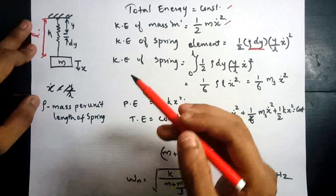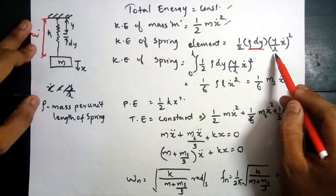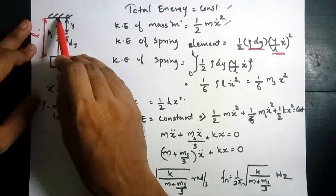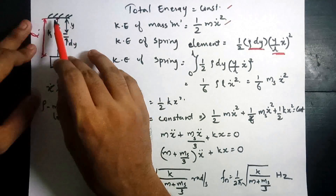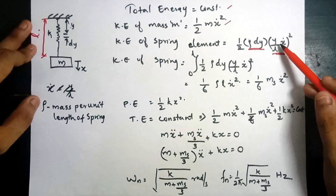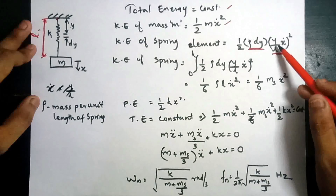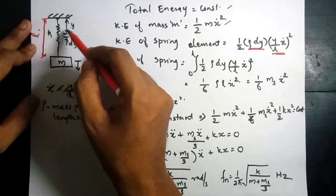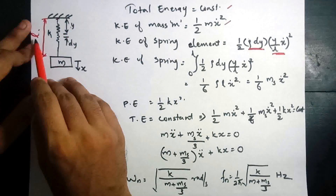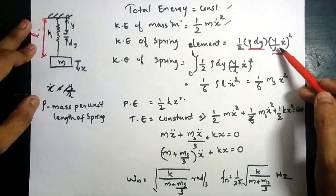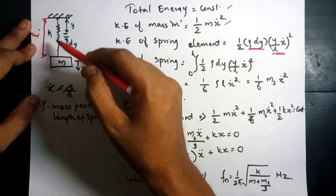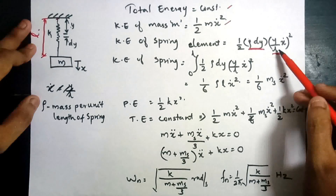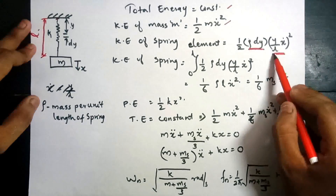The velocity at any point in the spring element is given by (y/L) times x-dot. At y equals zero, the velocity is zero. At y equals L, the velocity is (L/L) times x-dot, which equals x-dot. So the velocity varies linearly between zero and x-dot along the length of the spring.